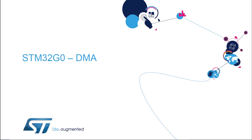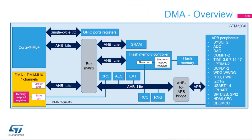In this part, we're going to talk about the DMA and the DMA-MUX of the STM32G0, and then we'll do a lab using the DMA. The Direct Memory Access, or DMA, embedded in the STM32G0 microcontroller is used to provide high-speed data transfer between peripherals and memory, memory and peripherals, and also between memory and memory, without the need of the CPU — so the CPU can be used to do other operations.